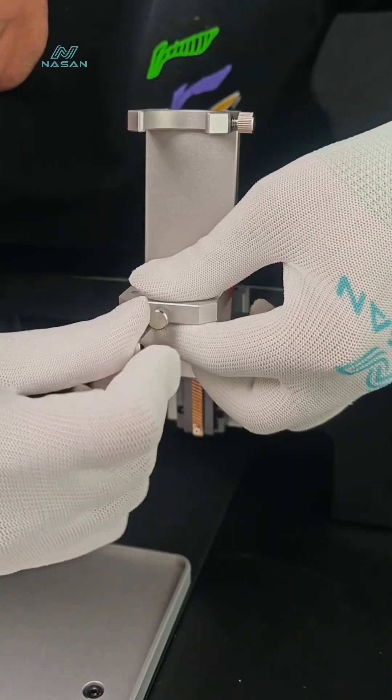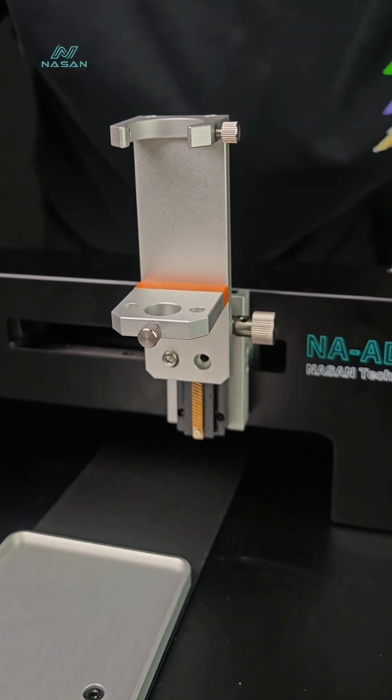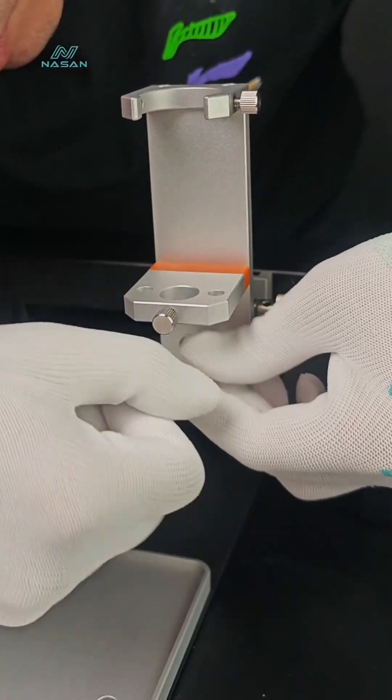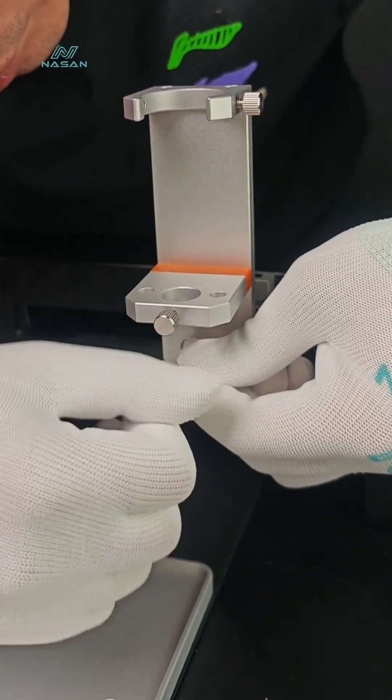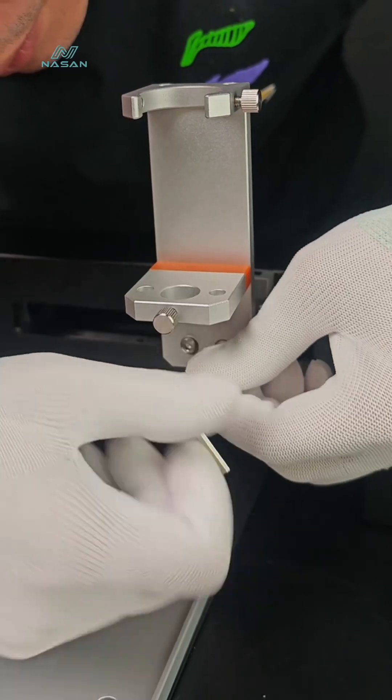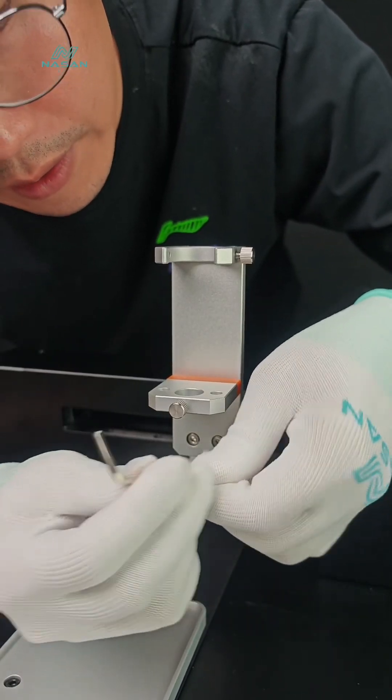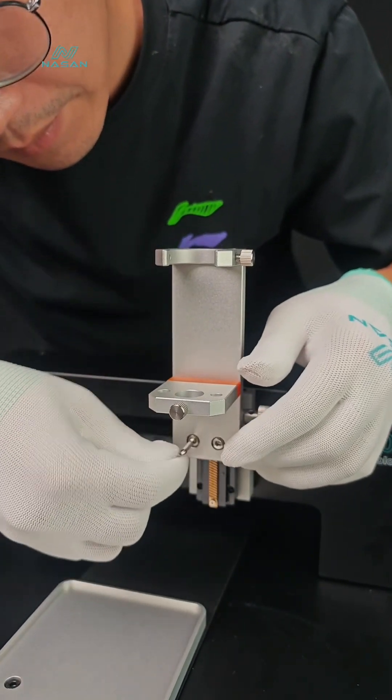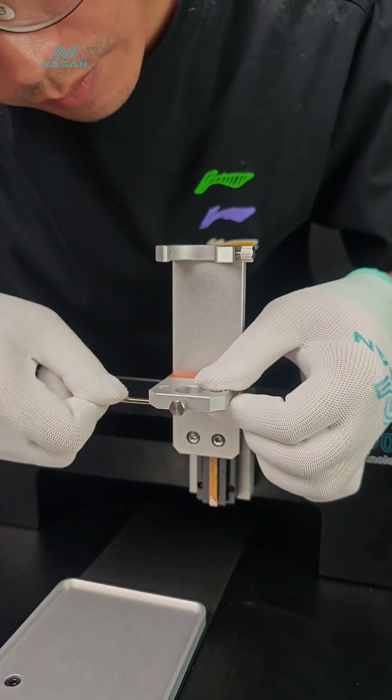And don't tighten them first until we install all four screws. And then we can tighten them one by one. And we can use this end to lock the screws. It is quite easy to install.